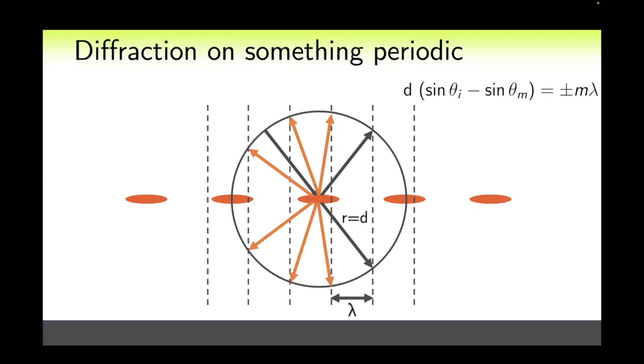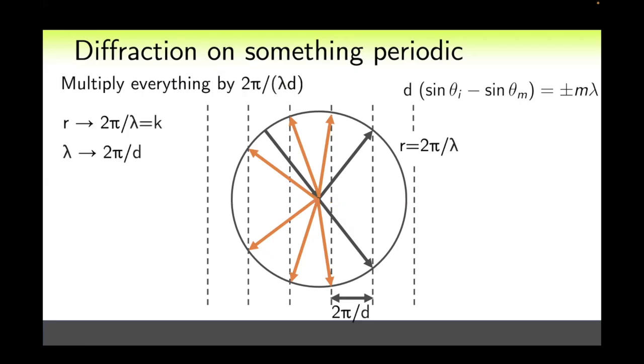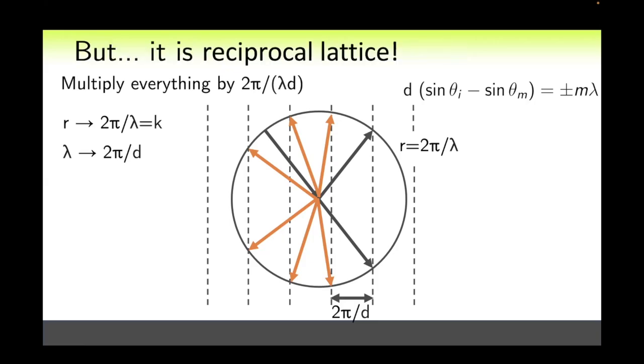In simple cases, this construction is the easiest and quickest to use. However, to generalize this task, we now need to multiply everything by 2π over lambda d. Then the radius of the sphere will already be 2π over lambda, which equals k, and the distance between the vertical lines will be 2π over d. The distance between the lines may remind you of something. And indeed, this distance is simply equal to the reciprocal lattice vector.